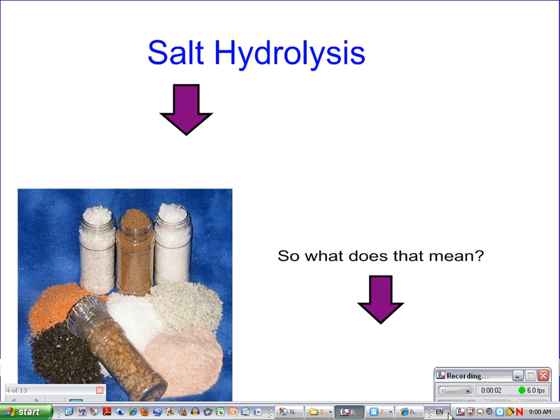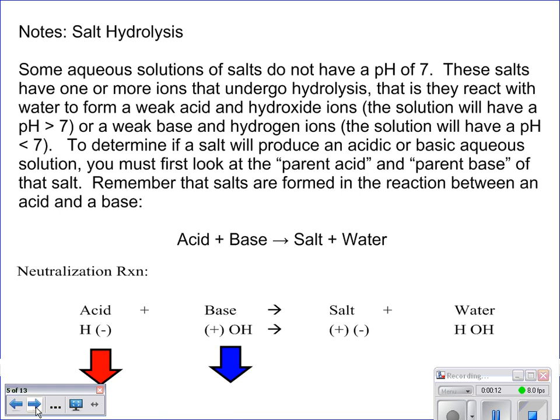Now for our last topic on acids and bases, and this is salt hydrolysis. Essentially this says that when you have a neutralization reaction, you're not always going to have the resulting solution be neutral. It's not always going to be that your acid and base completely neutralize. Sometimes it'll be more acidic, sometimes it'll be more basic, and it's all dependent upon what your parent acid and parent base are of that salt.